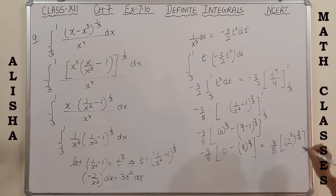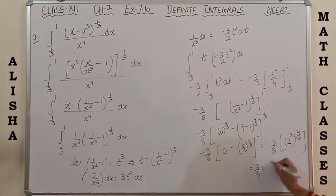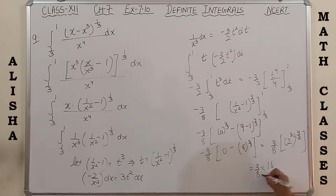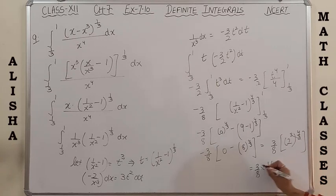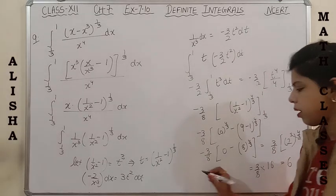Since 8 = 2³, we have (2³)^(4/3) = 2^4 = 16. So: (3/8) × 16 = 48/8 = 6. The answer is 6, which is option A. Option A is the correct answer. Please note down.